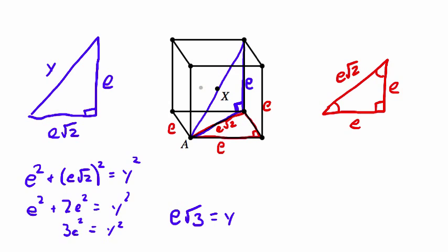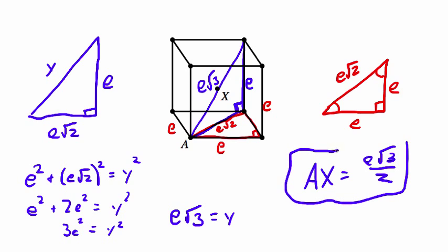So this is e√3, and I want to know ax, which is only half of that, so ax is going to be e√3/2. Cool? I think it's cool.